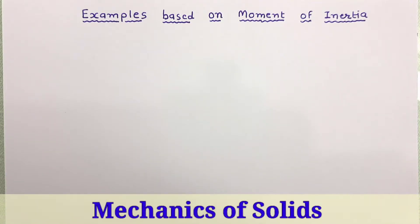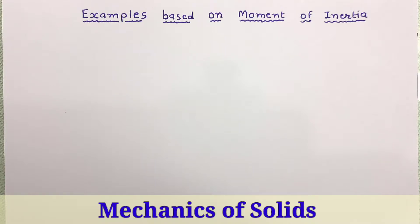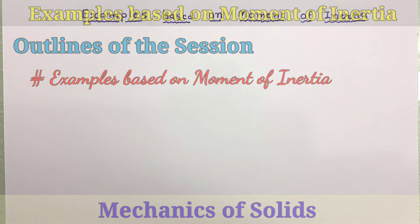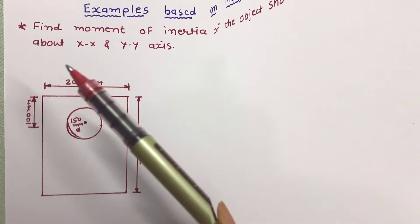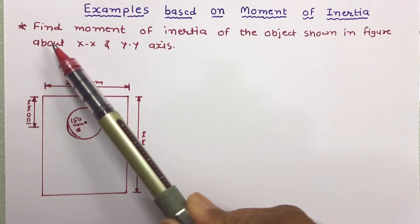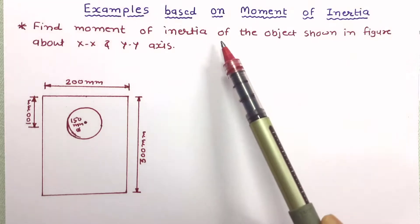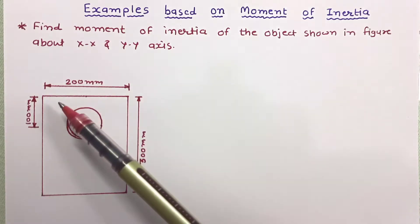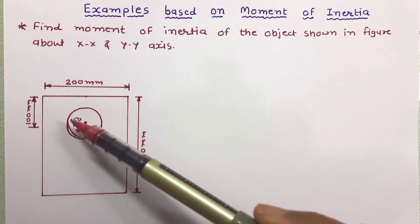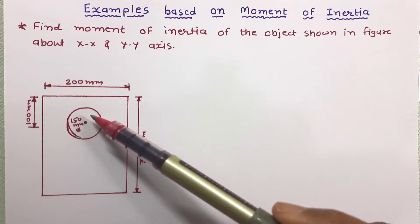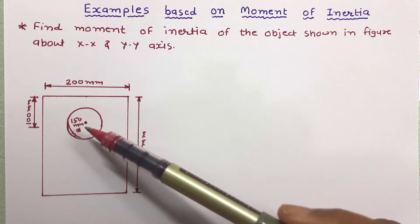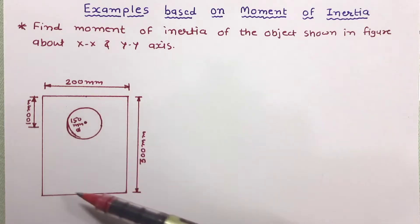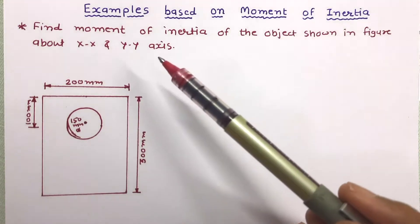Welcome to the lecture series of Mechanics of Solids. In this lecture we are going to solve more examples on moment of inertia. The problem is to find the moment of inertia of an object about xx and yy axes, where a rectangle is given and a circle is cut from it. The dimensions of the rectangle and the circle have been given and we are asked to determine the moment of inertia about both xx and yy axes.